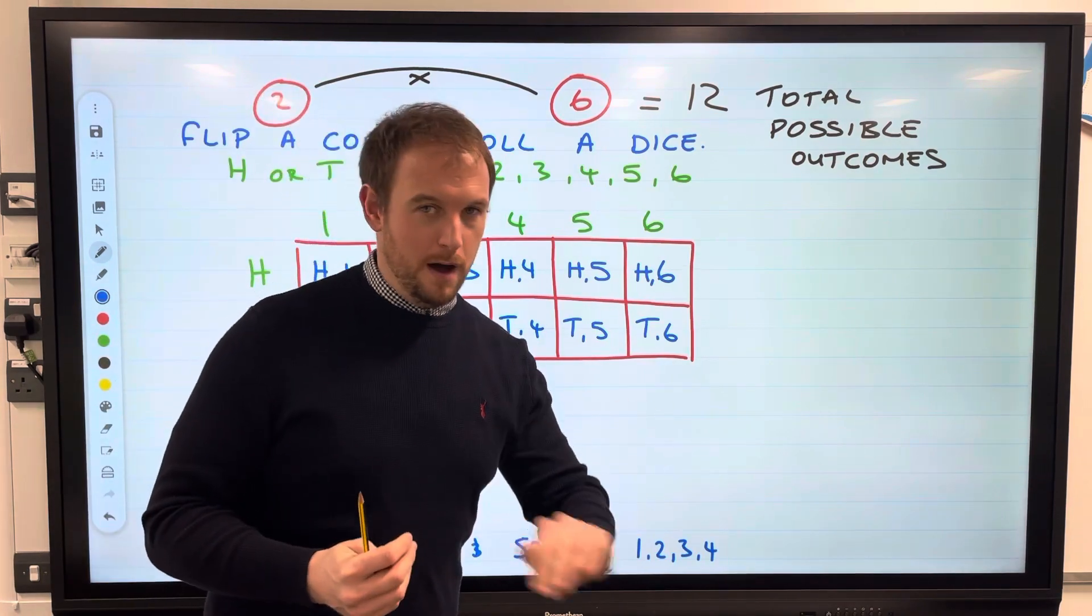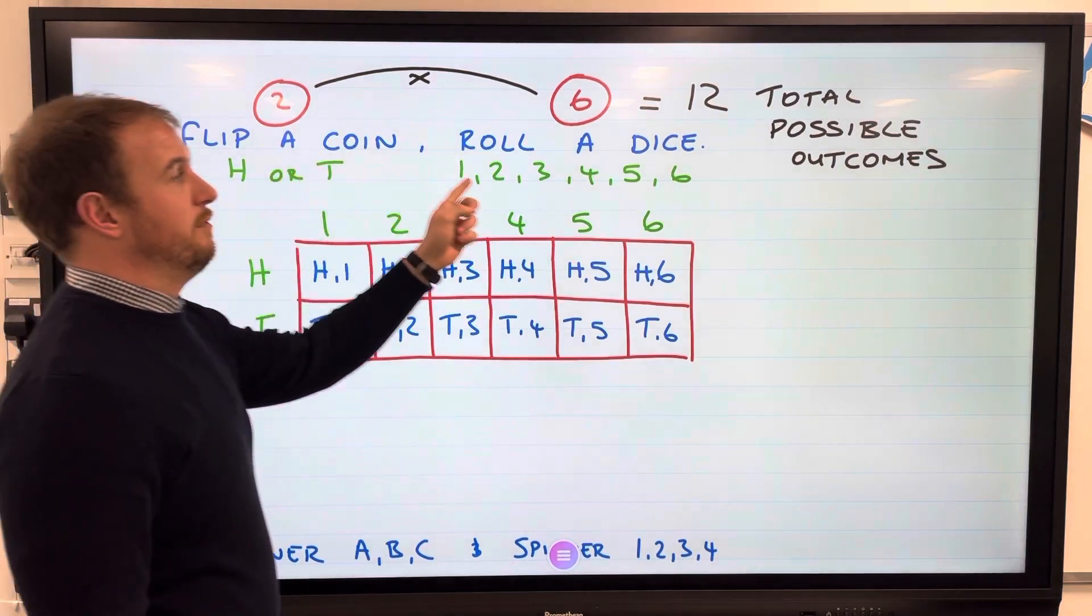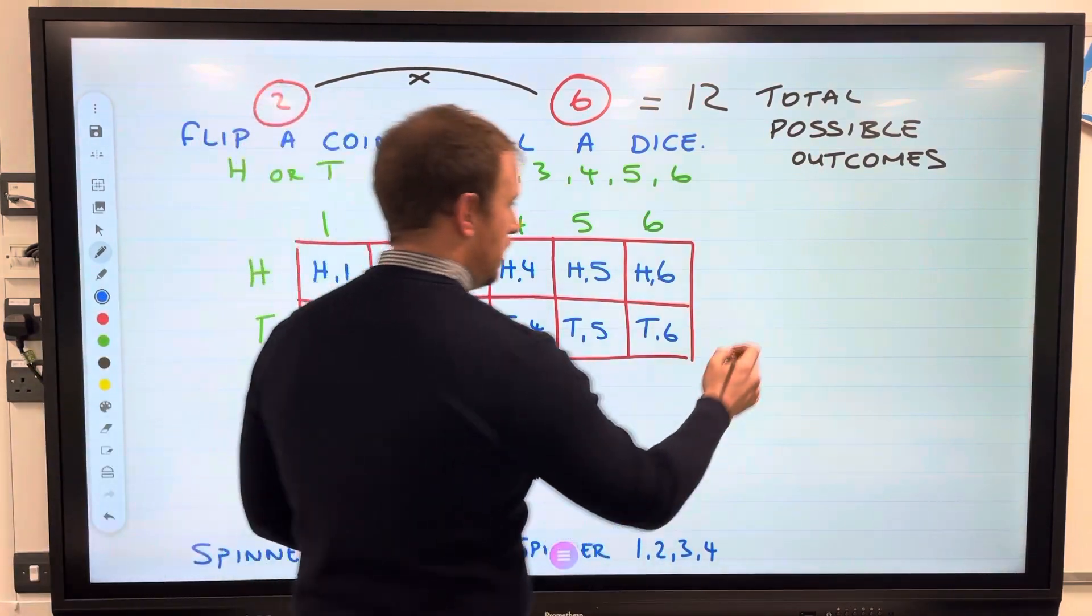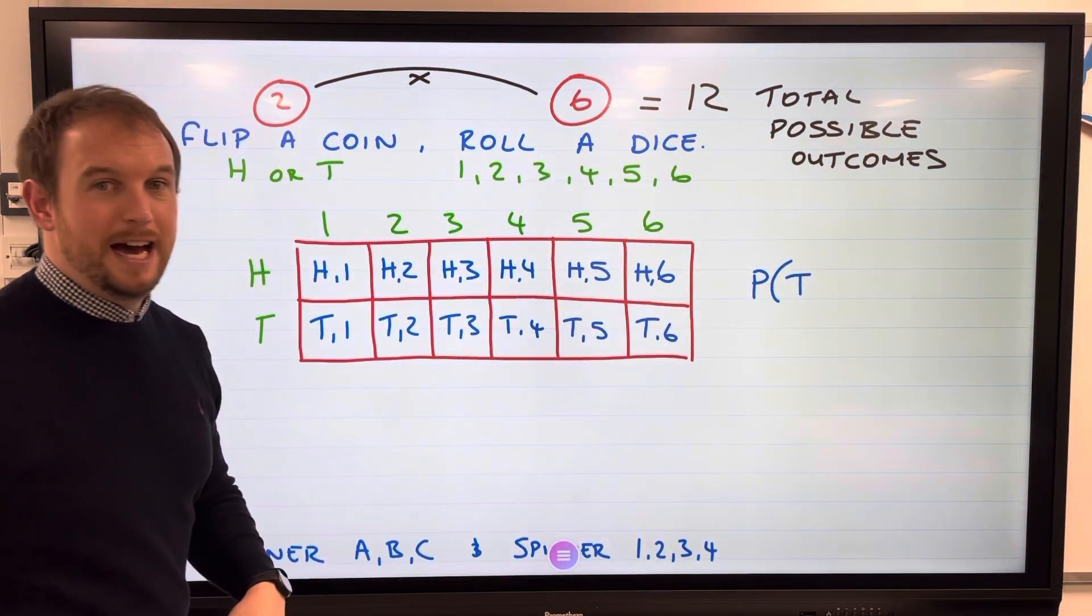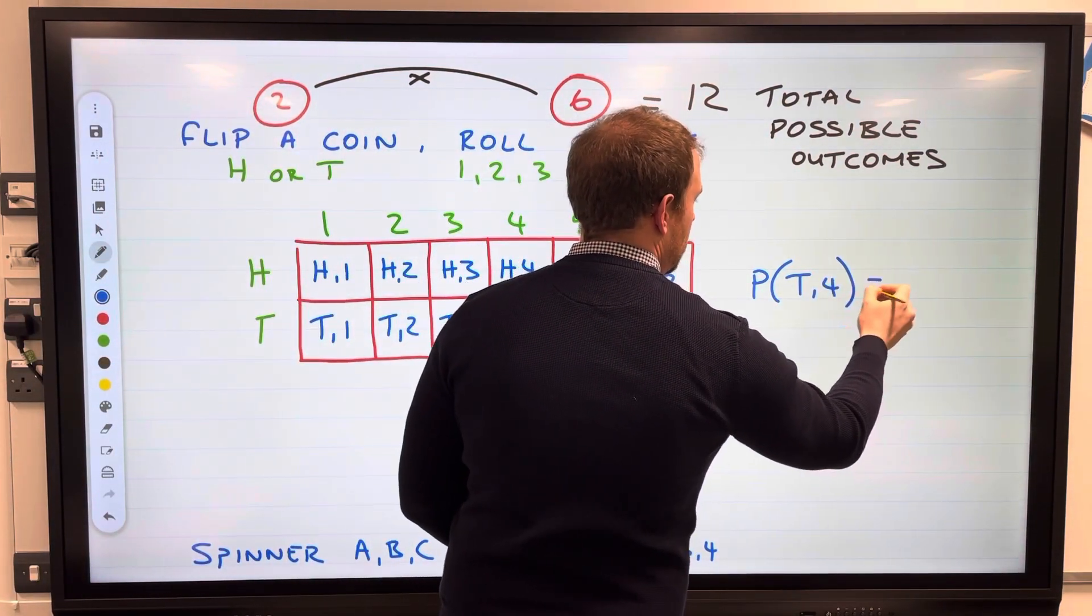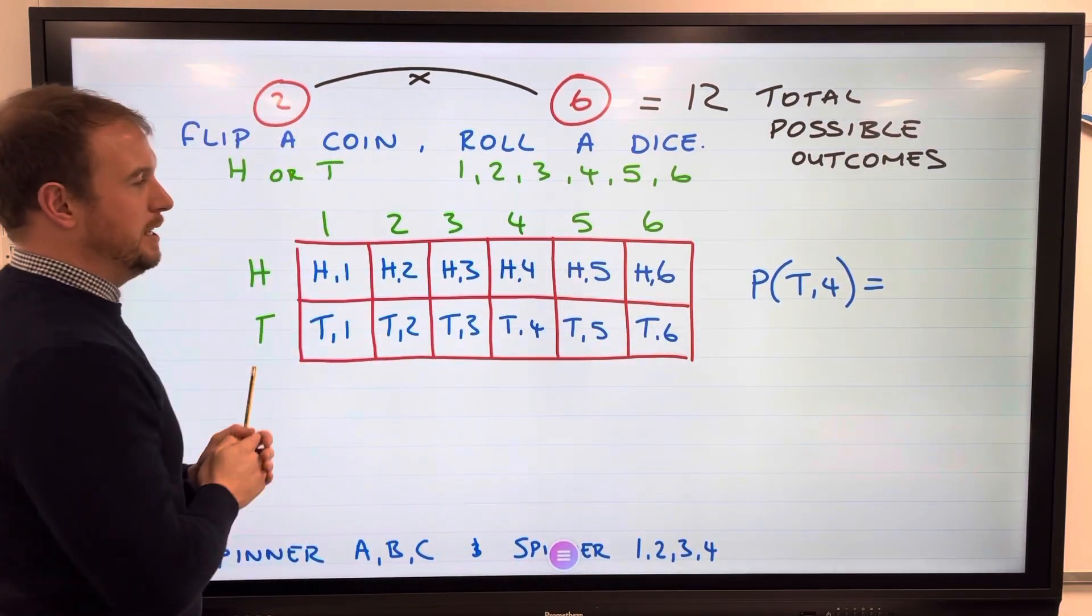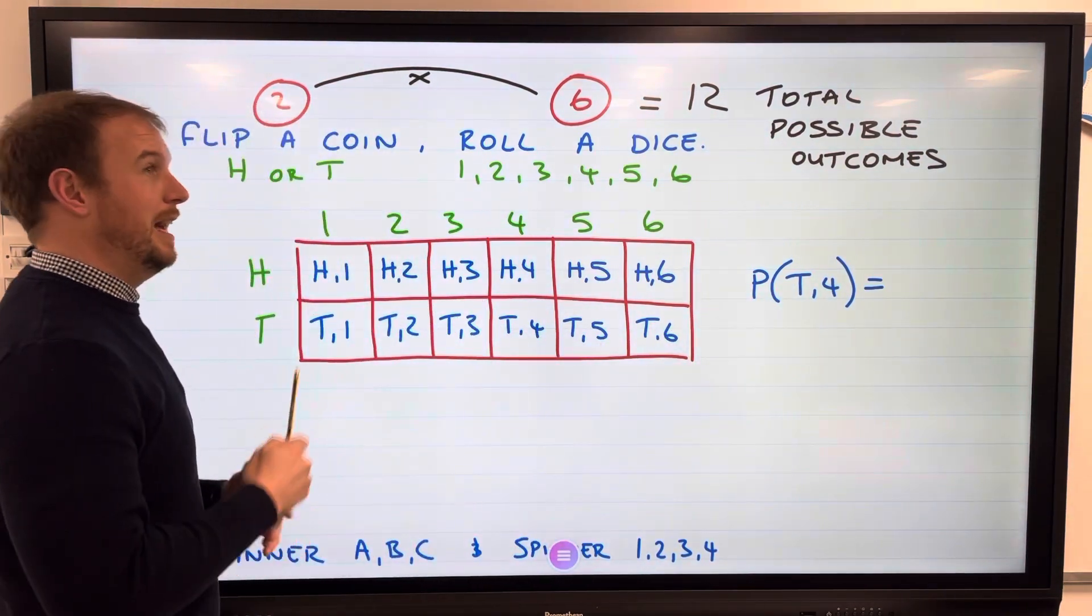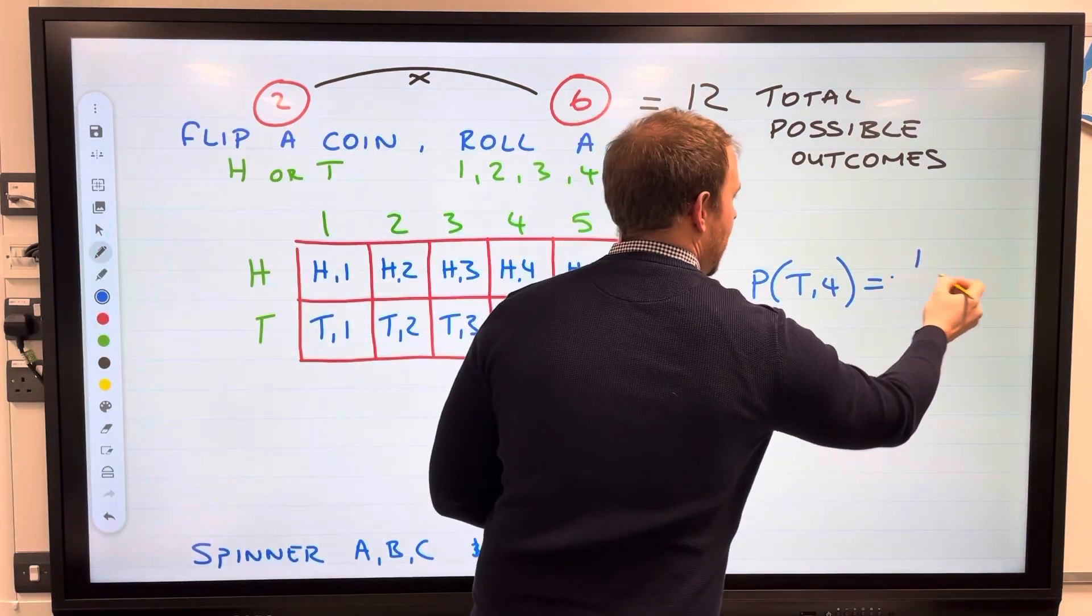There's always questions underneath - Part B, Part C. What is the probability when we flip a coin and roll a dice that we get a tail on a coin and the number four? The probability of tail, four equals - you can see here there are six possible times we can get a tail, however they said it needs to be a tail and a four, which is there. There's only one - one out of twelve total possible outcomes.